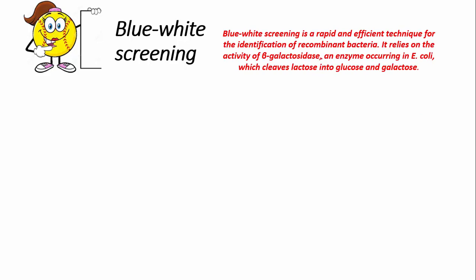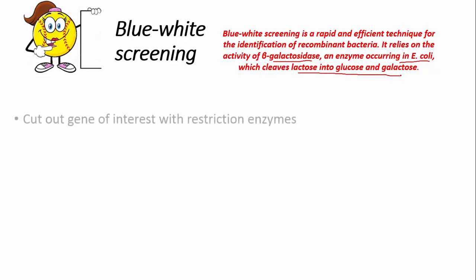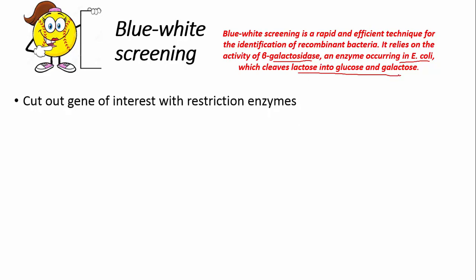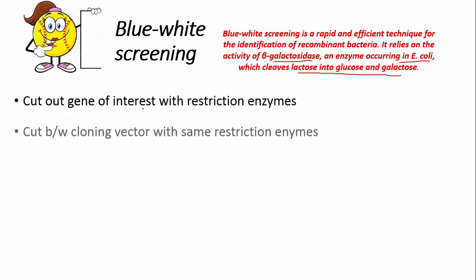Blue-white screening depends on the activity of the beta-galactosidase enzyme present in E. coli cells, which cleaves lactose into glucose and galactose. We cut our desired gene of interest with a restriction enzyme.